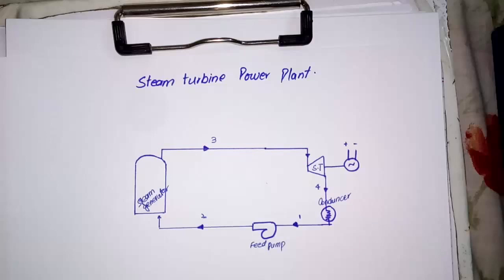This dry steam's energy is used to turn the turbine blades, which are connected to the shaft, so the shaft moves and the generator is able to produce electricity. After turning the turbine blades, the enthalpy of the steam decreases and some amount is changed into hot water, so the whole wet steam passes through the condenser and changes its phase from wet steam to liquid.